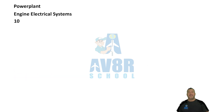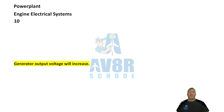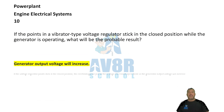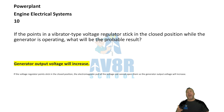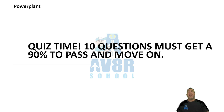Number 10. If the points in a vibrator type voltage regulator stick in the closed position while the generator is operating, what will be the probable result? The generator output voltage will increase. Take a quiz and I'll see you soon.